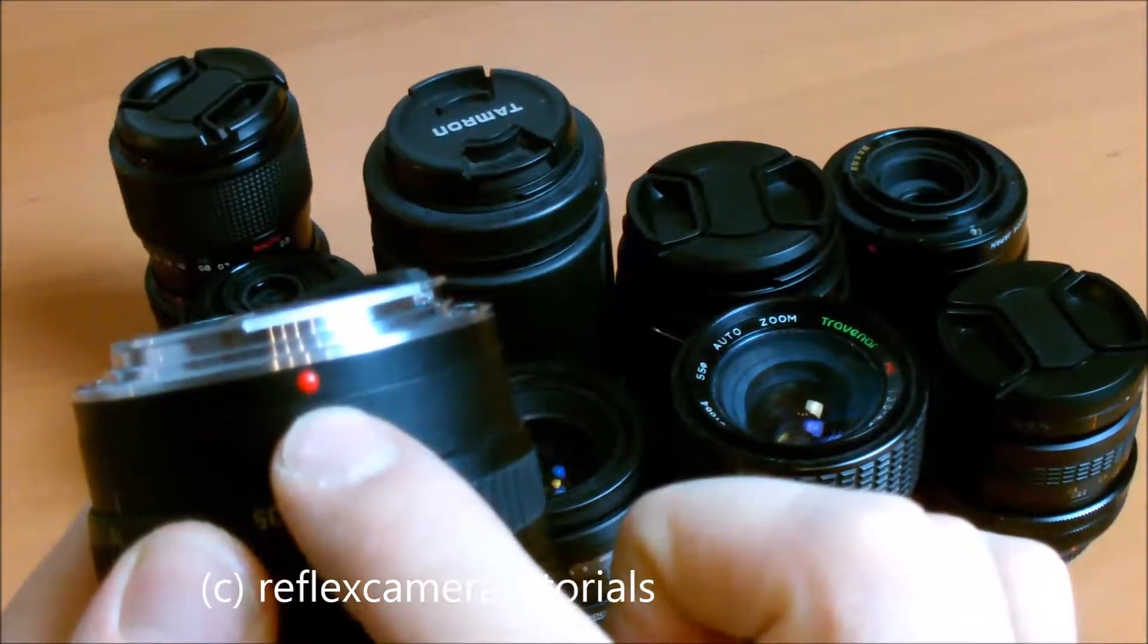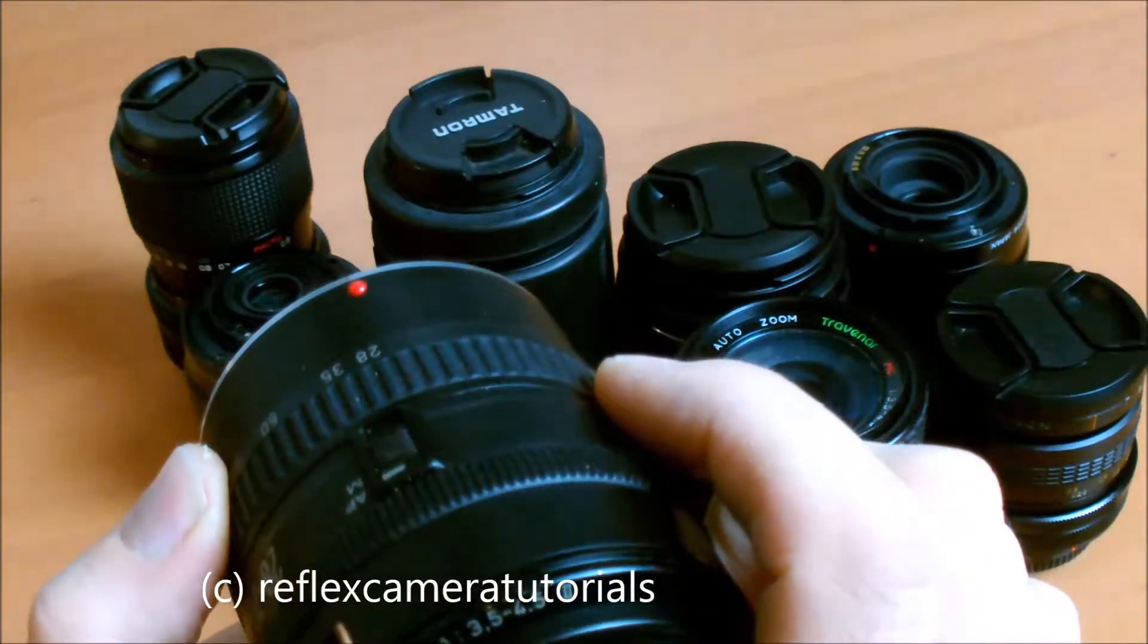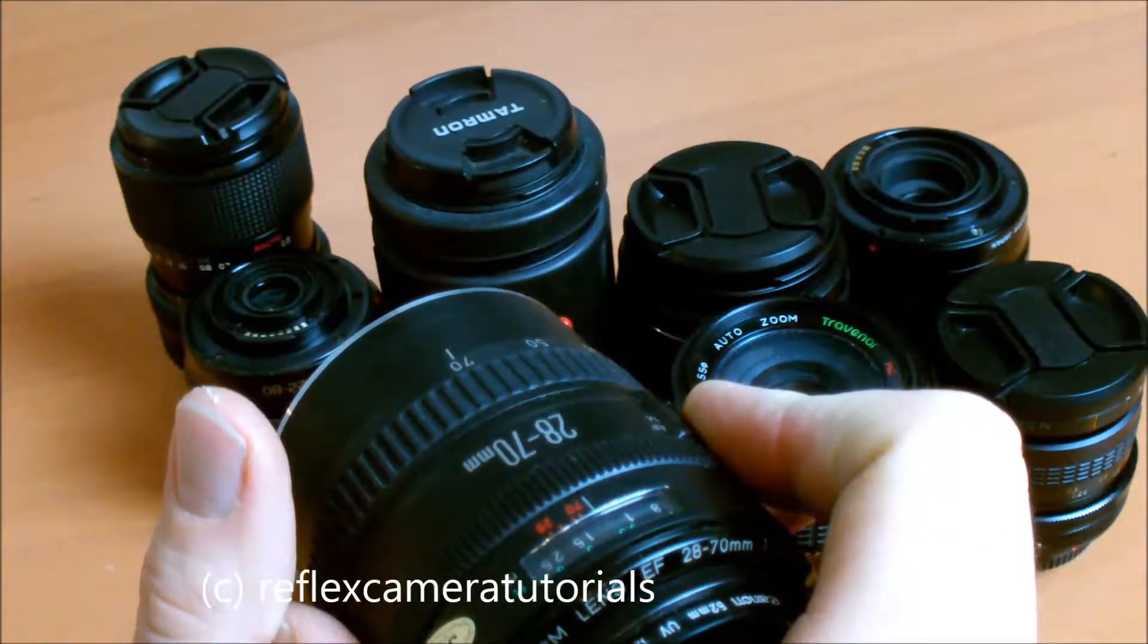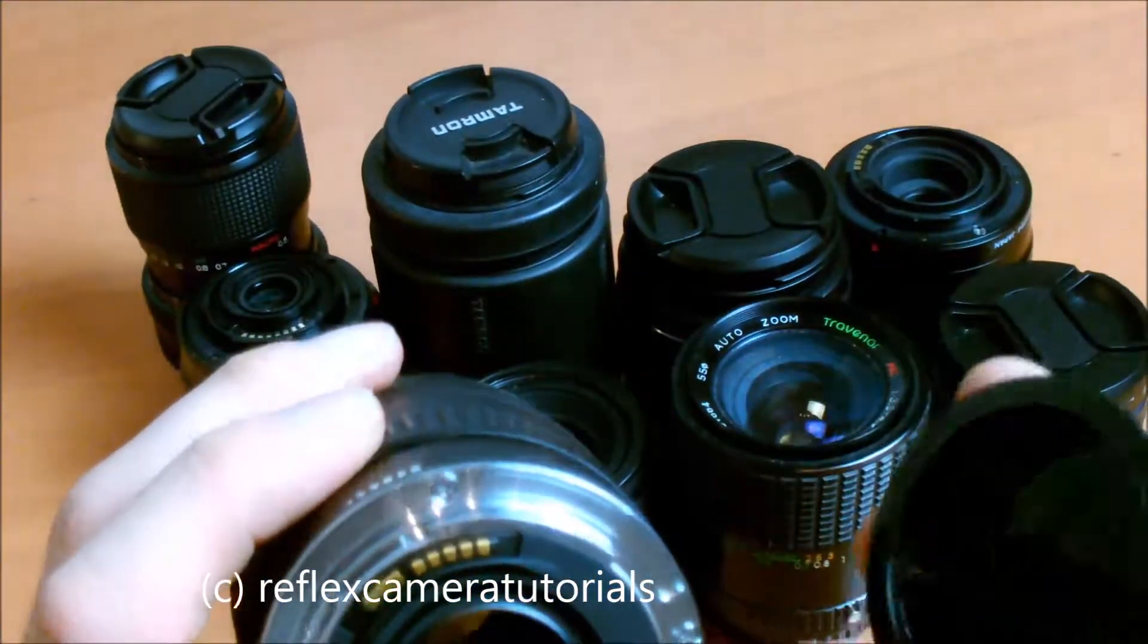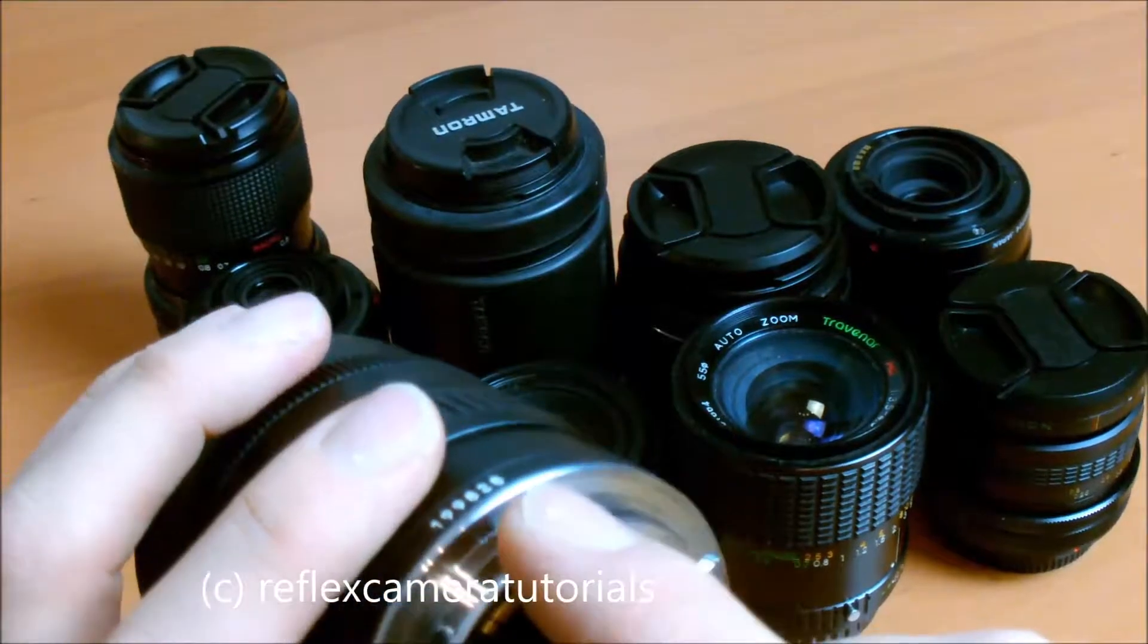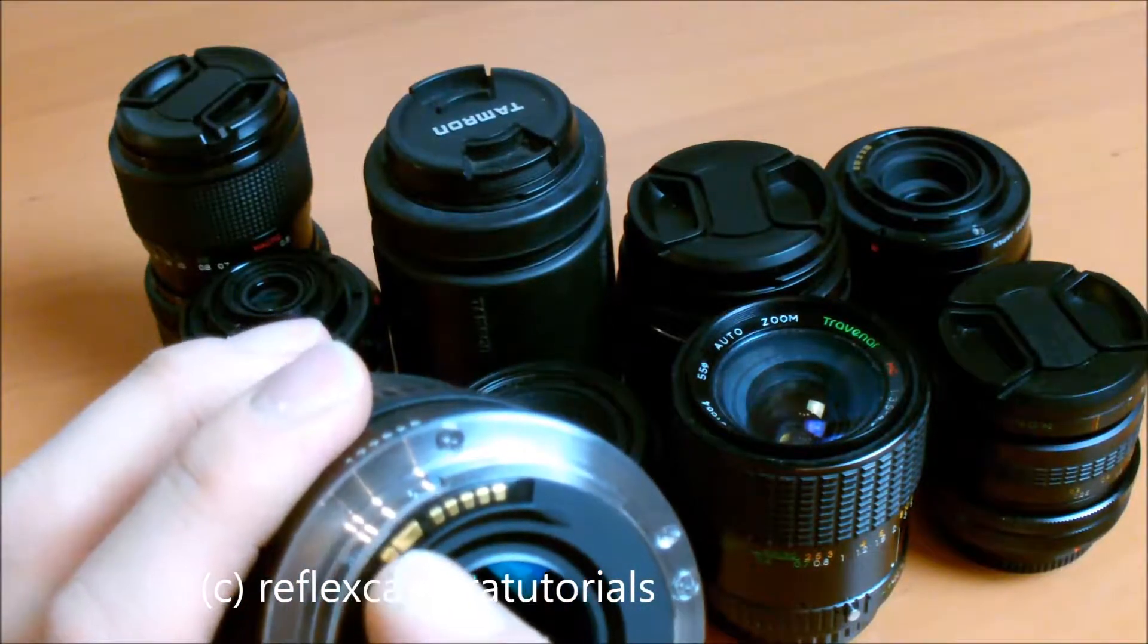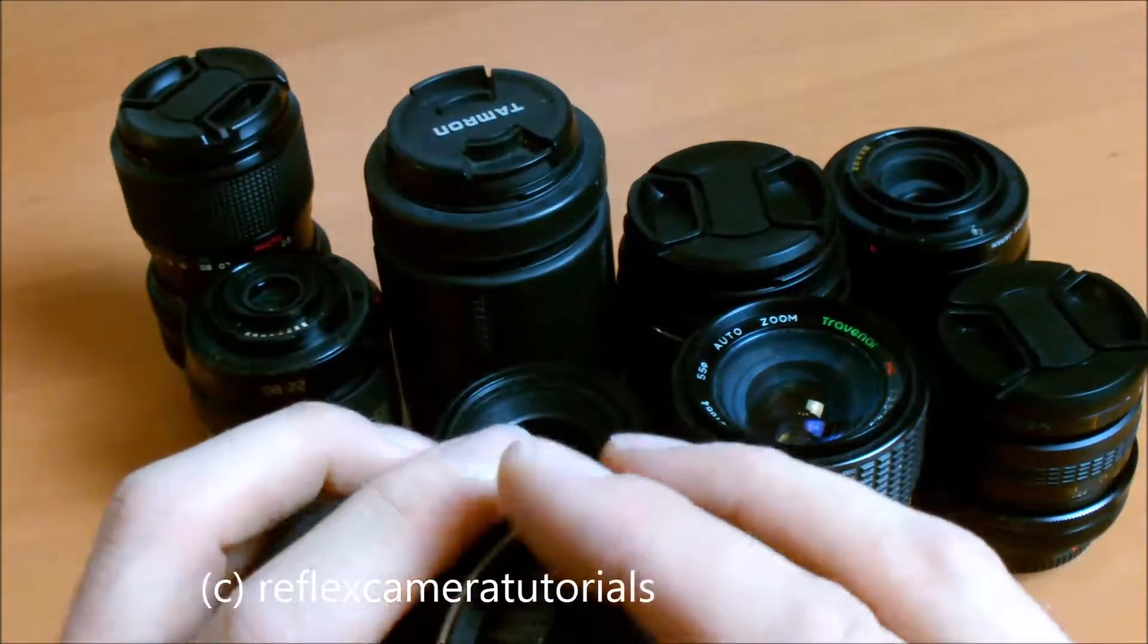Almost every EF lens has a red dot, so the red dot fits on the camera's red dot and then you turn it to the left as you see it from the camera. This one is recognizable with these three noses and of course five dots for these points and two bigger dots with contacts for the camera.